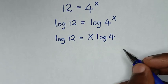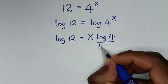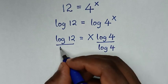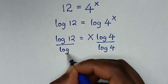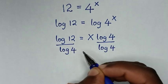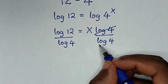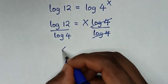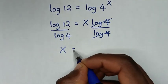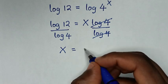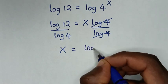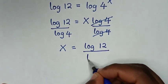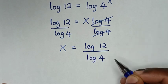In the next step, we divide by log of 4 on both sides. This log of 4 will cancel with this log of 4, giving us x is equal to log of 12 over log of 4.